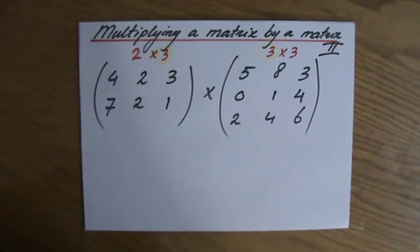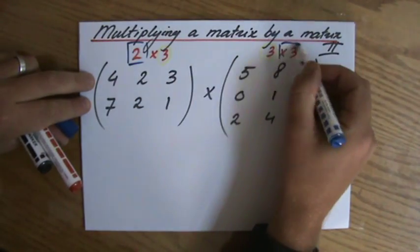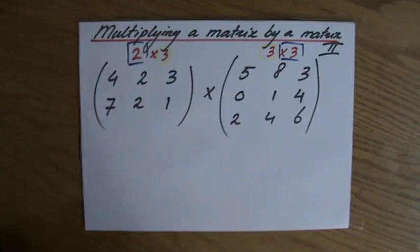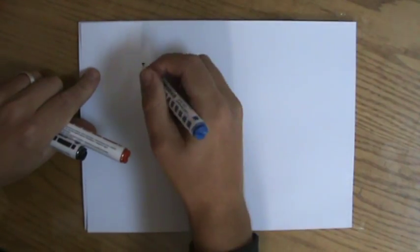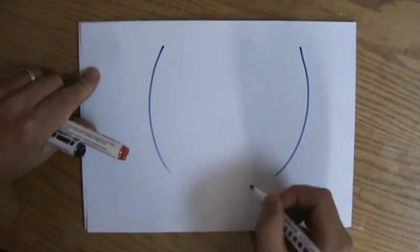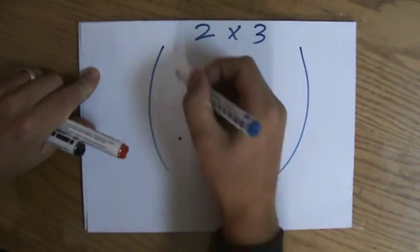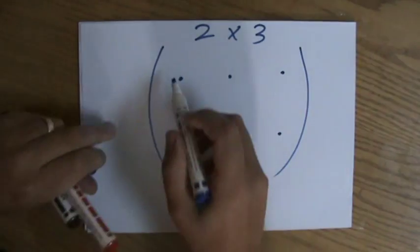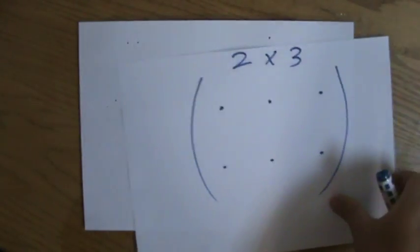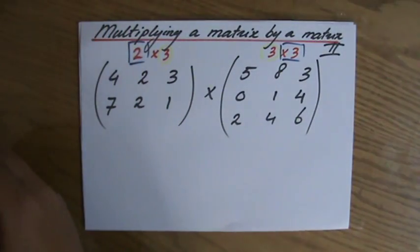Now, a piece of advice I'm going to give you: your answer is going to be a matrix of order 2×3 in this particular case. The outer numbers will always be the order of your answer. So 2×3, which means 2 rows and 3 columns. My answer should have a number on each dot. That's always good to tell you, because we have to take extra care while doing this.